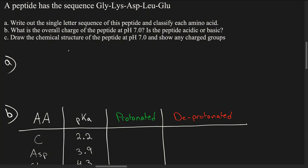The following problem covers the nature of a protein: how to write the shorthand sequence, whether it's basic or acidic, and what the pI is. In this question we're going to go over three main things: how to write the single-letter sequence, how to find the overall charge of the protein at a specific pH, and then how to draw it out completely to show the charge groups.